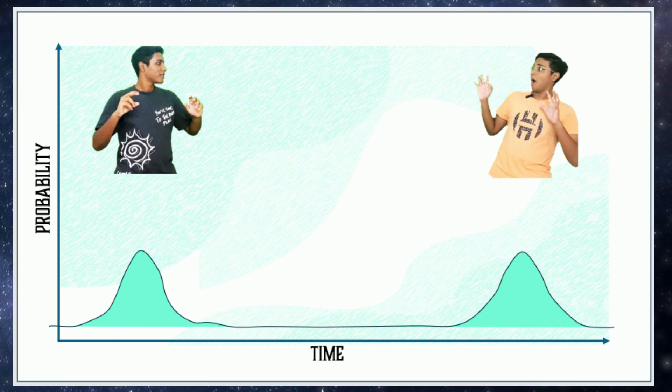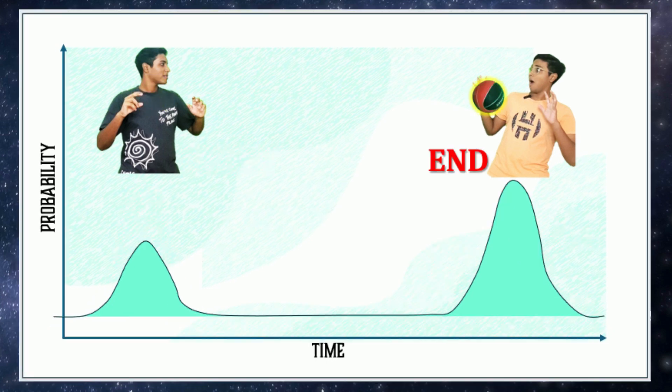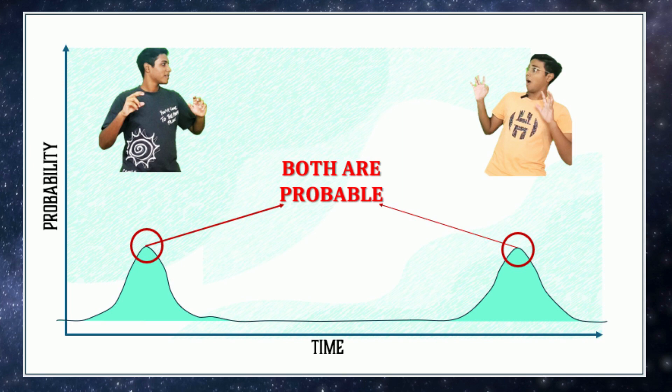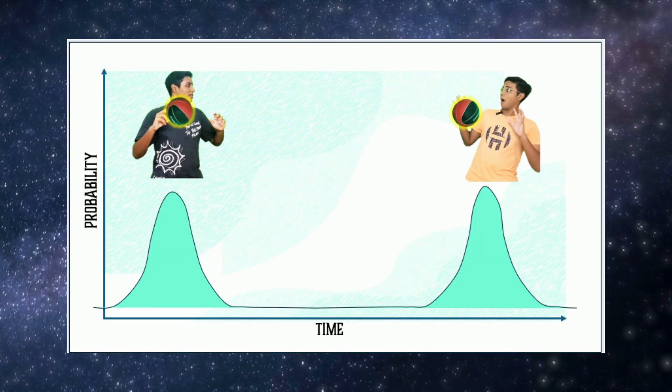So let's go back to the first case. We know that the ball is either at the start or the end of the path. Since we're not observing it right now, we don't know which state it is in, since both states are probable. So we assume it's in both states at once.